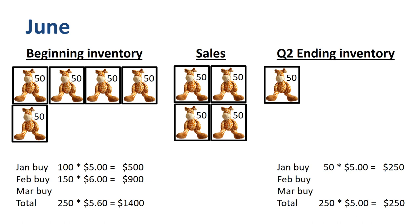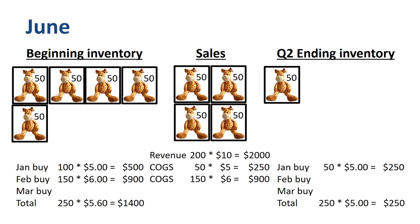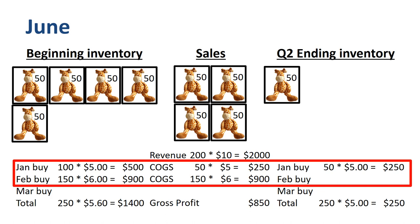If we prepare the income statement for June: revenue is 200 units times $10 is $2,000; cost of goods sold, or COGS, is 150 units times $6 is $900, plus 50 units times $5 is $250, so total COGS of $1,150; and therefore a gross profit of $850. Out of the remaining February buy that was part of the beginning inventory, we took all 150 units to COGS, and we took 50 units from the January buy into COGS. The remaining 50 units from the January buy go to the ending inventory.